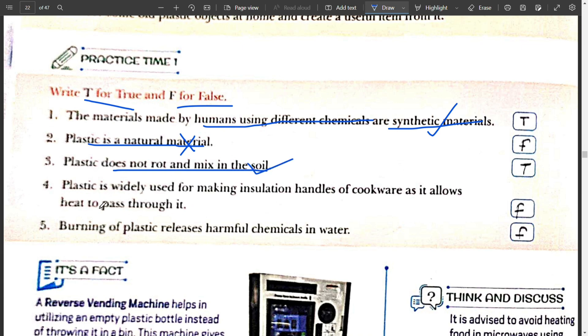Plastic is widely used for making insulation handles of cookware as it allows heat to pass through it. False. Plastic do not allow heat to pass through it. It is a good insulator. Question number 5. Burning of plastic releases harmful chemical in water. No. Burning of plastic releases harmful chemical in air, not in water. So this sentence is false.